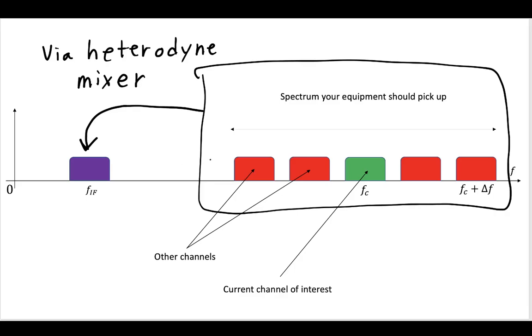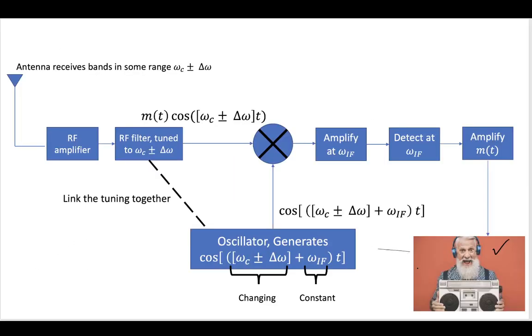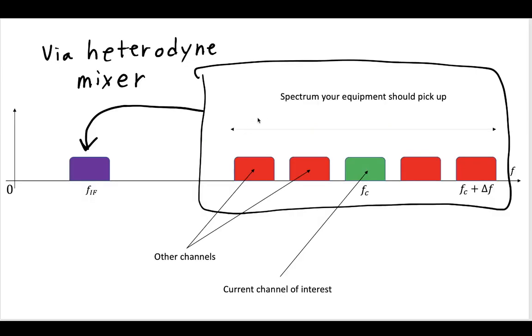So if we go back to our channel diagram, basically what our equipment does, what our radio does, is it takes any one of these channels, it filters it, and moves it down to an intermediate frequency where you have a much better filter. And this filter here is going to work really well to eliminate any adjacent channels.